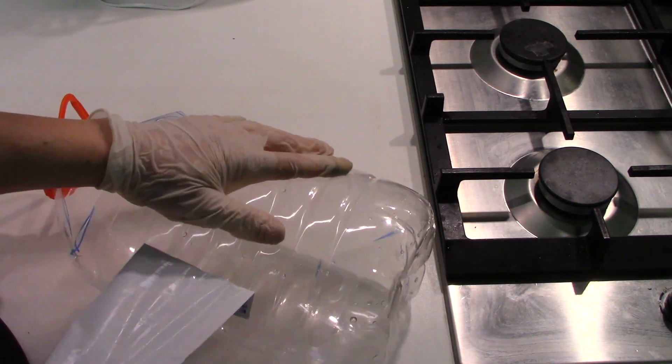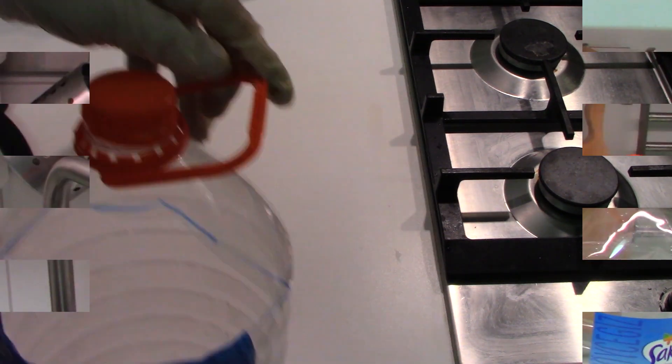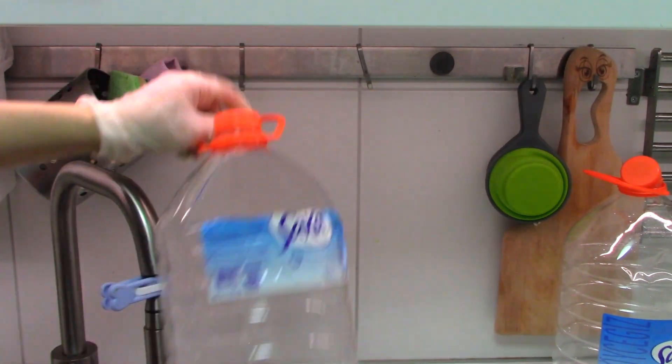When done, you can take out the sticker of the bottle and stick it on the edges to protect our hands. Now your new trash bin is ready.